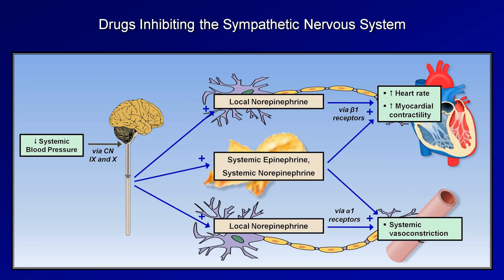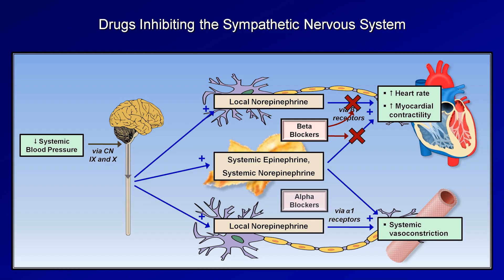There are also drugs that inhibit the sympathetic nervous system. Coincidentally, there are also five general categories here. These include beta blockers, which inhibit epinephrine and norepinephrine's activities at beta-adrenergic receptors, normally responsible for increasing heart rate and myocardial contractility. And there are alpha blockers, which inhibit those hormones' activity on alpha-adrenergic receptors, normally responsible for inducing systemic vasoconstriction.